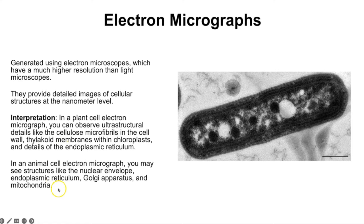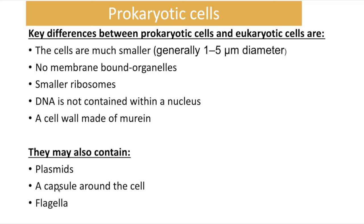Moving on to prokaryotic cells and their key differences from eukaryotic cells. Prokaryotic cells are much smaller — typically 1–5 micrometres in diameter. They contain no membrane-bound organelles, have 70S ribosomes, contain DNA but not within a nucleus, have a cell wall made of murein, and some also contain plasmids, a slime capsule, and flagella — though not all have those last three.